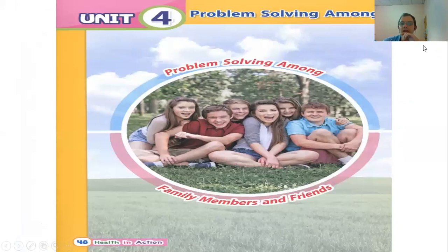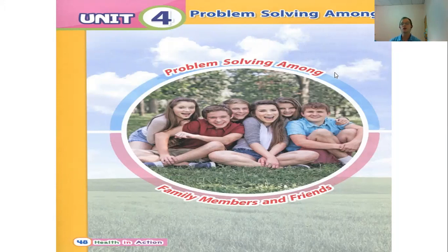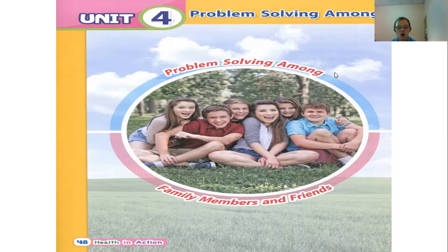For today we're going to move on with a new chapter — Unit 4: Problem Solving Among Family Members and Friends. This is a very important topic, because in our families and with our friends we will not always agree on everything. Sometimes they want us to do something we don't want to do, or something happens and we lose trust in that person. It's important to understand how we deal with certain things that happen in our families and friend groups.